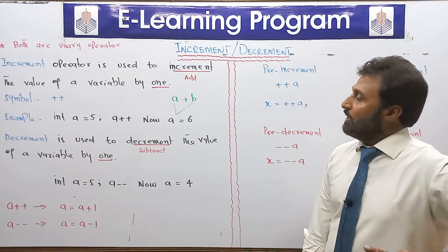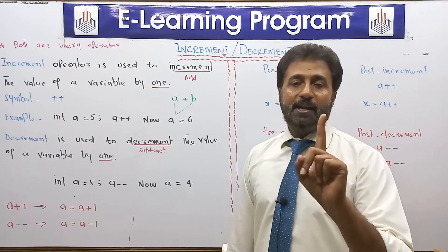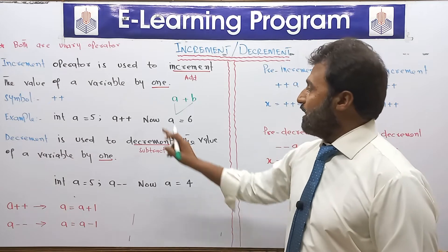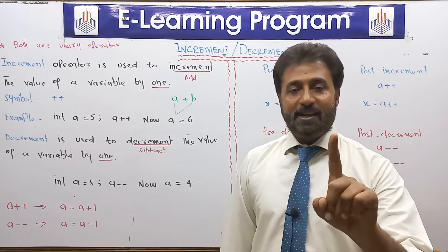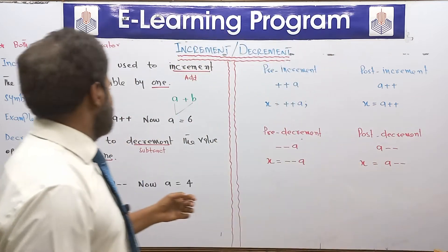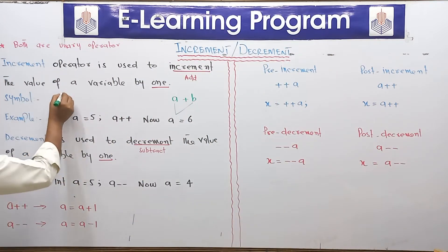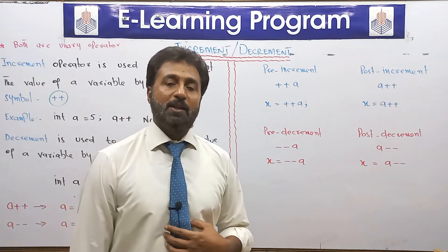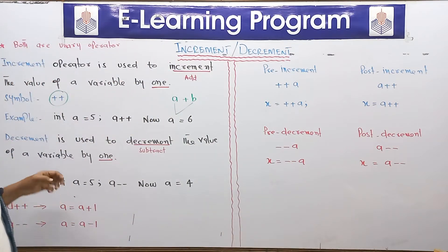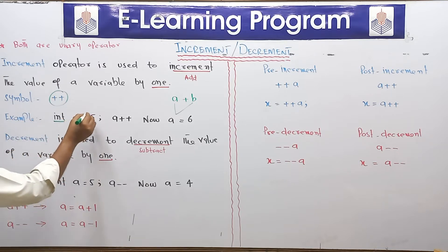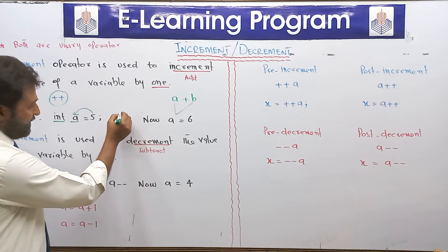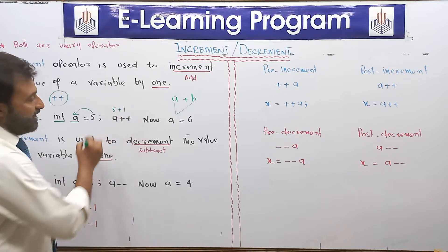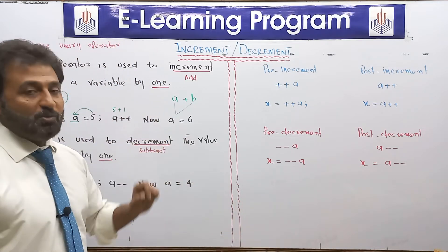Increment operator is used to increment the value — increment means add one. It adds one to a variable automatically. Iska symbol hai plus plus — do plus. For example, humare paas ek variable hai jis ki data type integer hai, variable ka naam A hai, humne value assign ki A ko five. Jab humne A ke saath plus plus laga diya, it means five plus one — ek humne us mein add kar diya. Now A is equal to six.